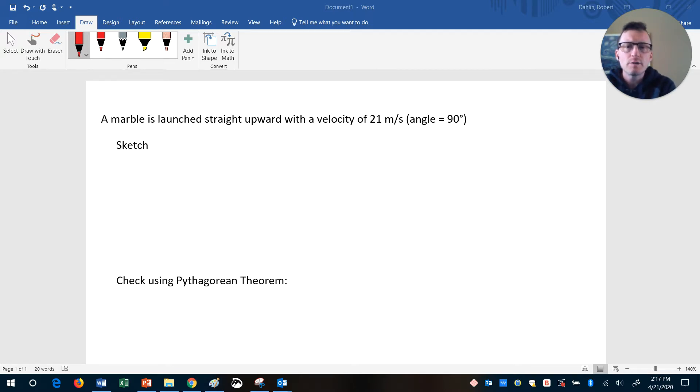When something is launched straight upwards, what do we do with that? What does that mean? So it's really helpful to start with a sketch. So we know that here's a marble, and just imagine our marble launchers, and it's going straight up, and it has a velocity of 21 meters per second.